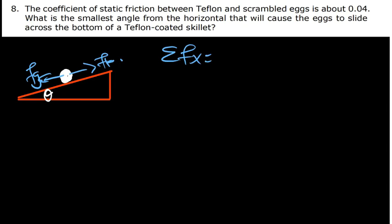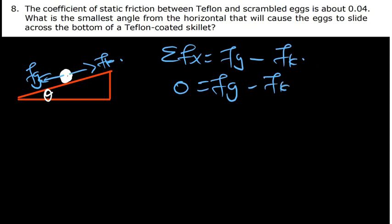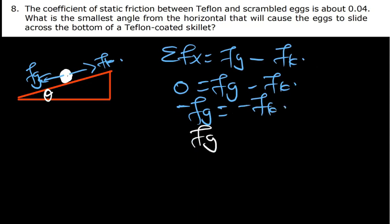Since the egg is not moving, the net force is zero. The summation of forces in x equals Fg minus friction force equals zero, so Fg equals friction force. On an incline, Fg equals mg sine theta and the normal force equals mg cosine theta. So mg sine theta equals mu times mg cosine theta. Canceling mg, we get sine theta equals mu times cosine theta.